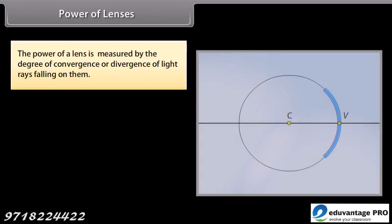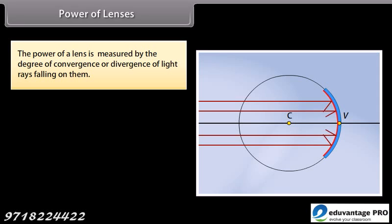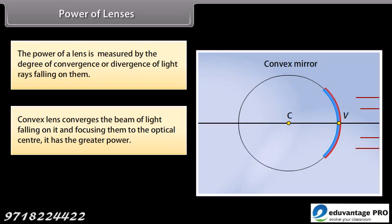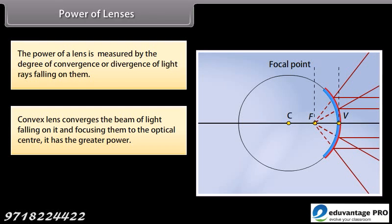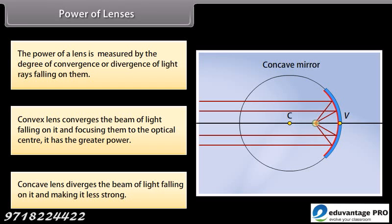Power of lenses: the power of a lens is measured by the degree of convergence or divergence of light rays falling on it. A convex lens converges the beam of light falling on it, focusing them to the optical center — it has greater power. A concave lens diverges the beam of light falling on it, making it less strong.